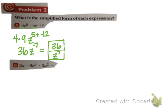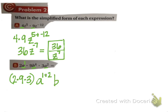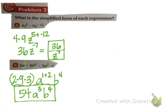In example two, if a number isn't in parentheses with the variable it doesn't get the exponent. So we have two times nine times three — that's 54. For the variables, only same bases get combined: a to the first times a squared gives a to the one plus two, which is a to the third. B doesn't have anything to combine with, so it stays as b to the fourth. The answer is 54 a cubed b to the fourth.